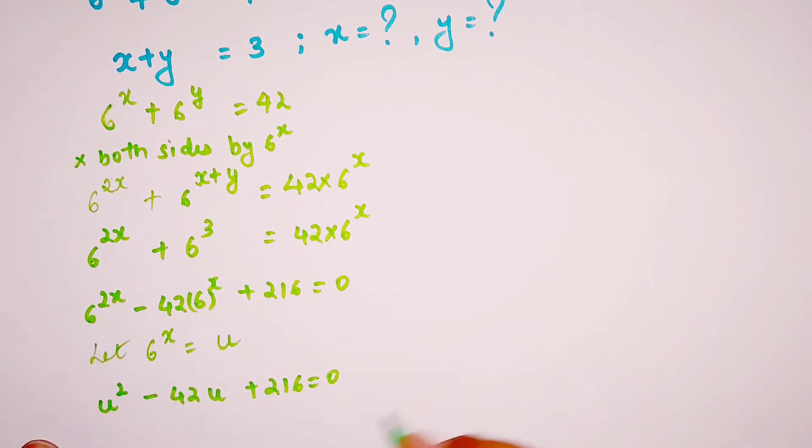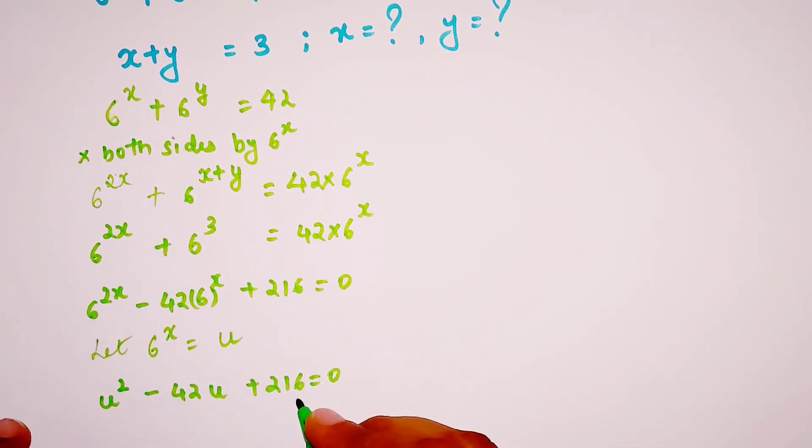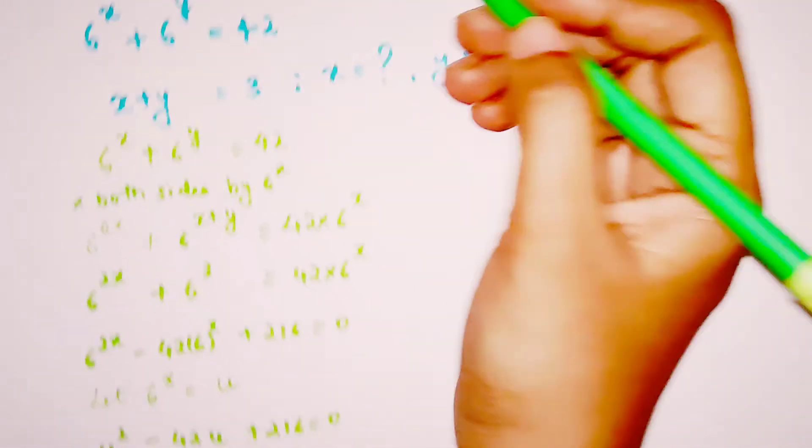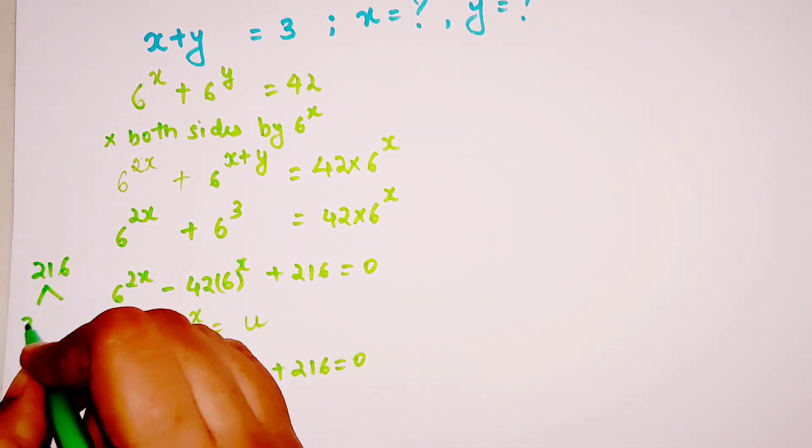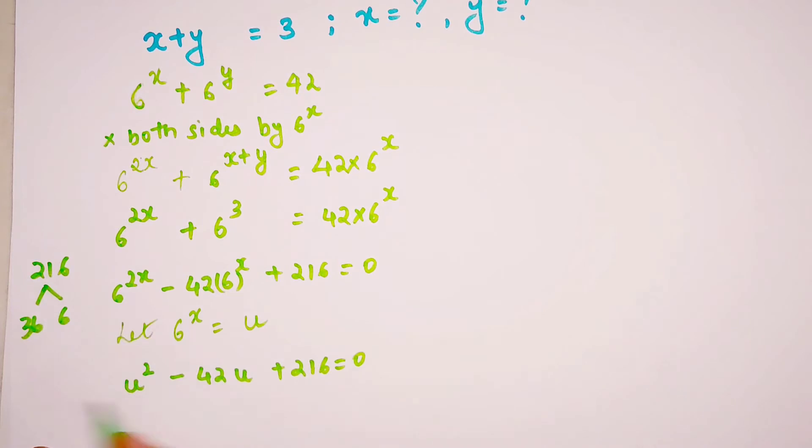Now for factors, we know that 216 is 36 × 6, because it's 6³. 216 can be written as 36 × 6, and when you add both we get 42. So we can write this as u² - 36u - 6u + 216 = 0.